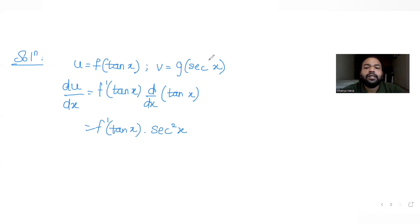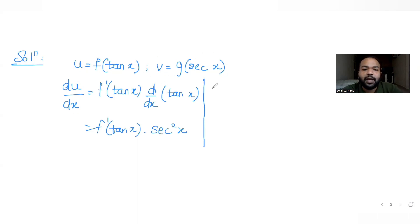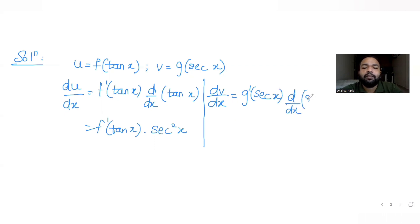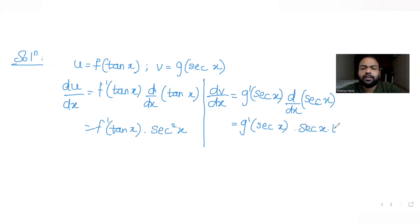Now let's find dv/dx. We know v = g(sec x). Differentiating with respect to x gives g'(sec x) into the derivative of sec x. The derivative of sec x is sec x·tan x. So dv/dx = g'(sec x)·sec x·tan x.